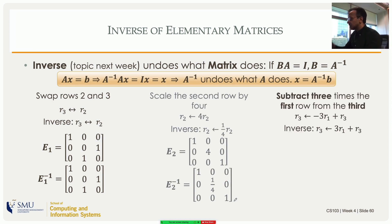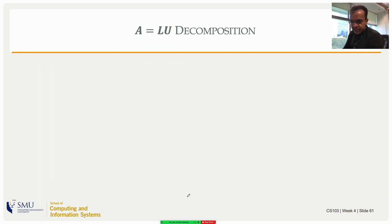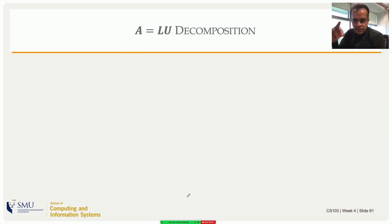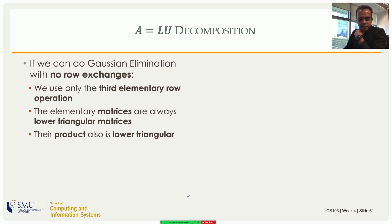For the operation of subtracting three times the first row from the third, the inverse is adding three times the first row to the third — simply changing the sign of that entry. Now let's consider the situation where we go from A to its row echelon form using only the third type of elementary operation — scaling and adding, no row exchanges. The elementary matrices will all be of the lower triangular kind.